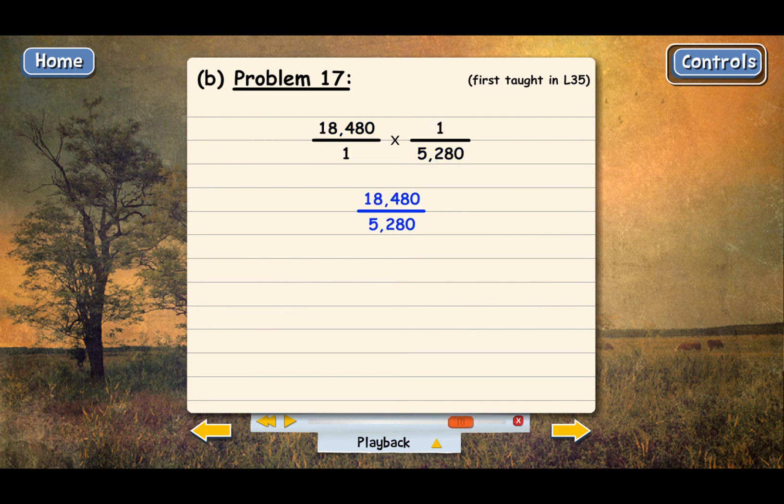I won't go through the whole division here, because you've gotten plenty of practice with that. But when we divide the bottom into the top, we end up with 3.5. So 3.5 miles is the answer to problem 17.